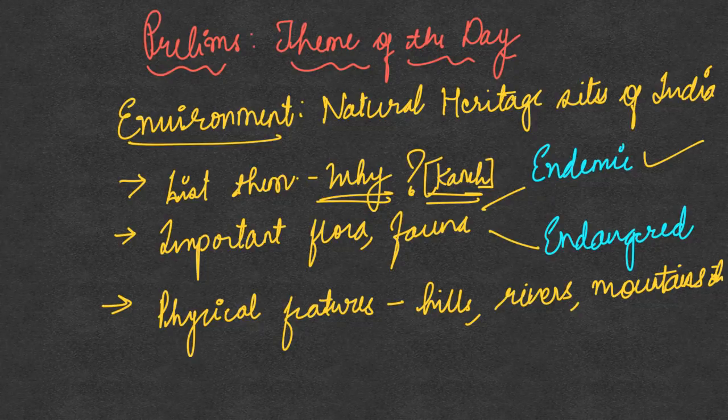For instance, in the case of Kanchenjunga, which falls in the mixed category, it is both a cultural as well as a natural heritage site. So it becomes all the more important for you to know why it has been categorized under the mixed category.